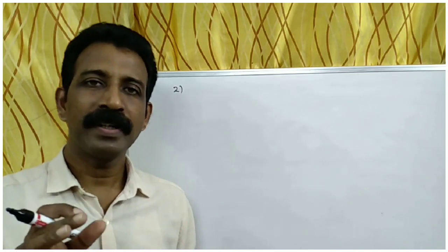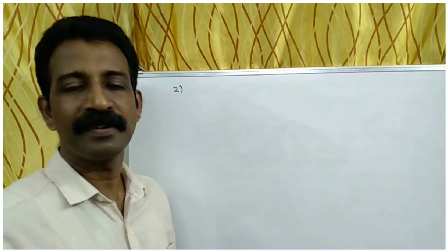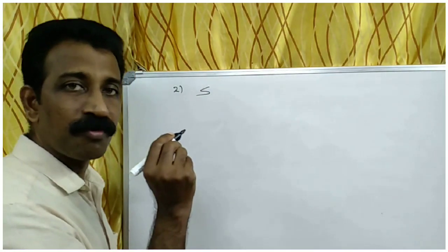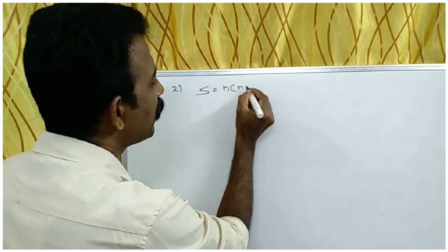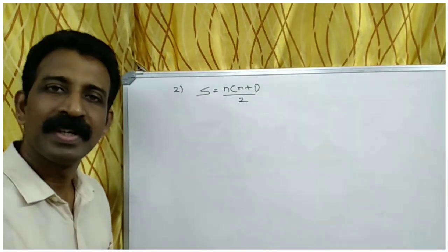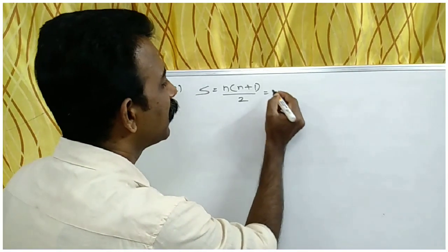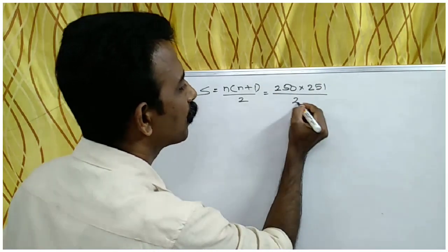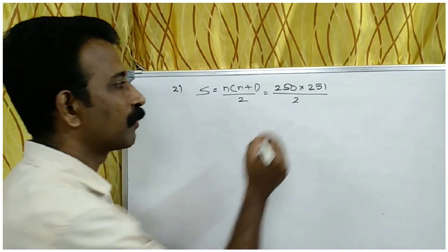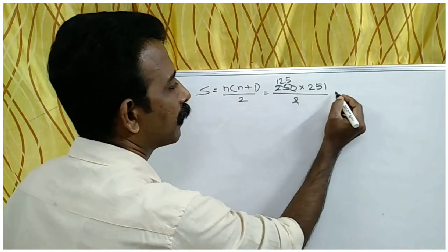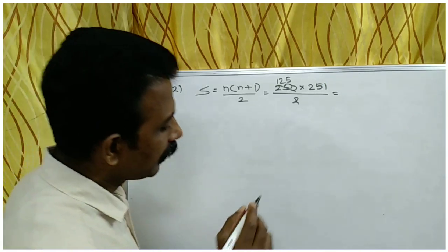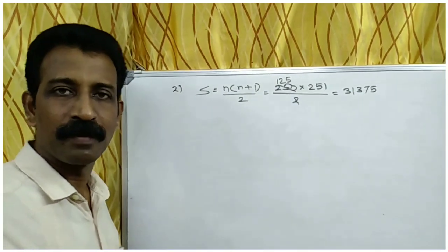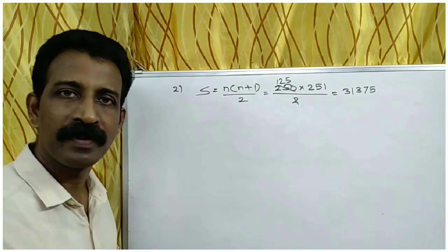We have to find the sum of the first 250 natural numbers. That is 2080 NLs. The formula is S equals N into N plus 1 by 2.